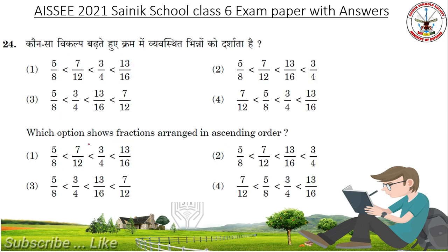Which option shows fractions arranged in ascending order? Answer is 7/12 less than 5/8 less than 3/4 less than 13/60.